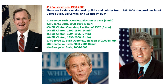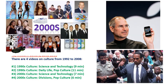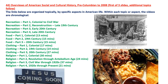The next topic is conservatism, 1988 to 2008, with nine videos on the domestic politics and policies of the presidencies of George Bush, Bill Clinton, and George W. Bush. There are four videos on the post-Cold War era and the War on Terror, 1992 through 2008, covering the foreign policy of the Bill Clinton and George W. Bush presidencies. There are four videos on modern American culture from 1992 through 2008.